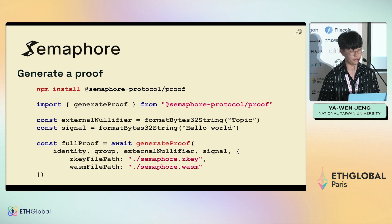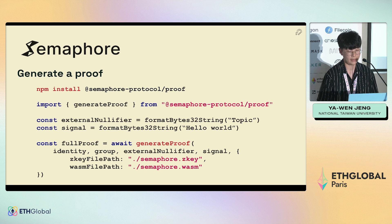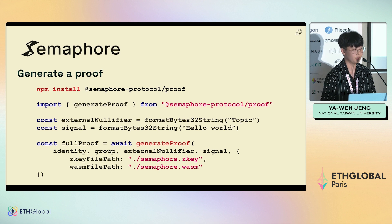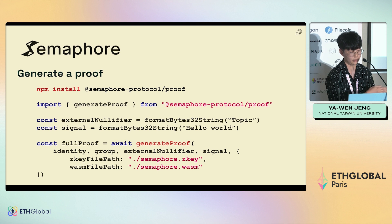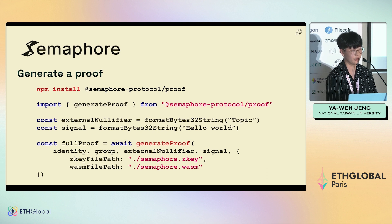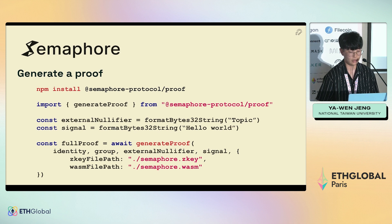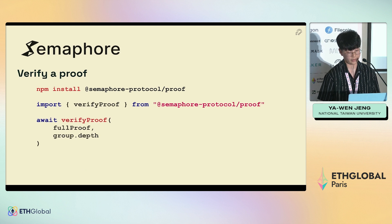To generate a ZK proof, you install the package called Semaphore protocol proof. There is a generate proof function inside. You can include an external nullifier and a signal in your proof. The external nullifier is used to prevent your action from being done twice — for example, if you want to vote on an event, the external nullifier is the name or topic of the event, and the signal is your vote. The signal can happen many times, but the external nullifier can only happen once. You include this information in your proof and encode it with the generate proof function. There's also a verify proof function — you provide the proof and the group root, which is the Merkle tree root provided in the group object.